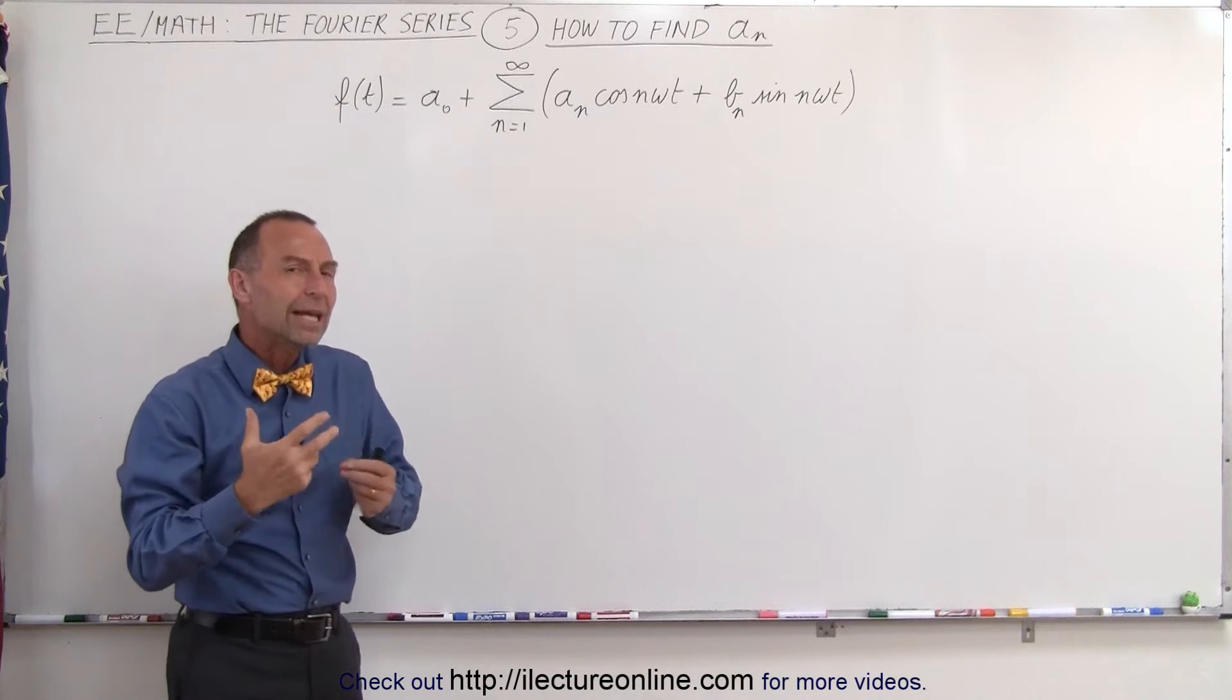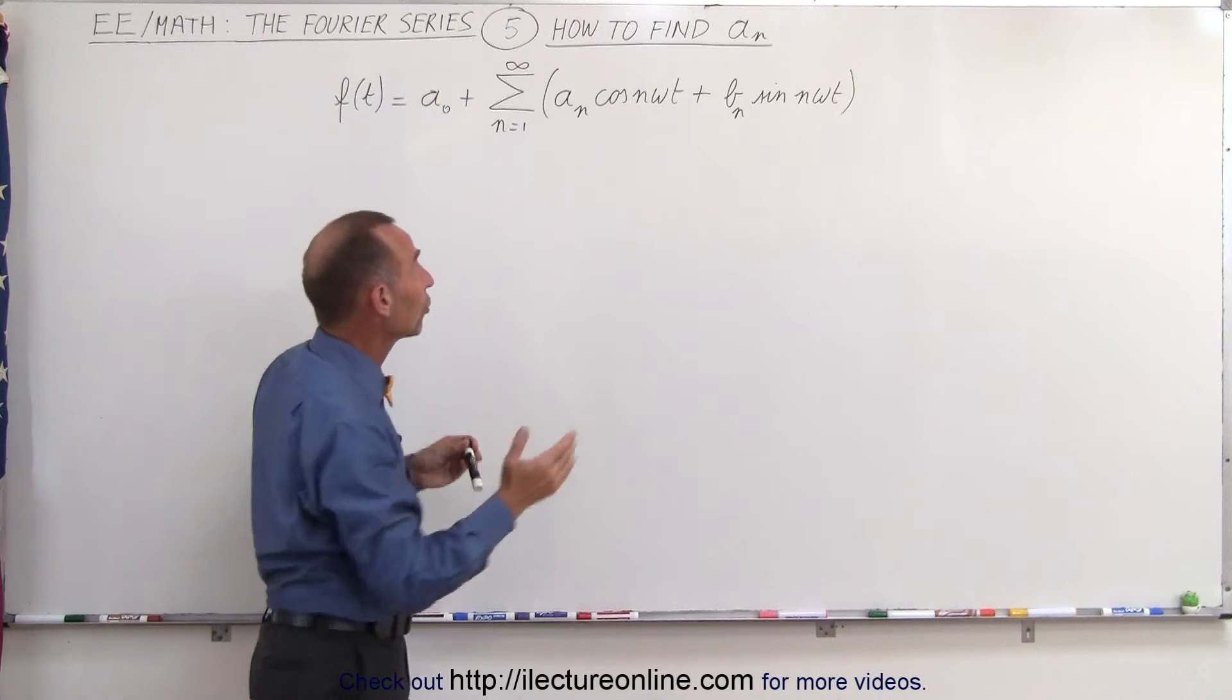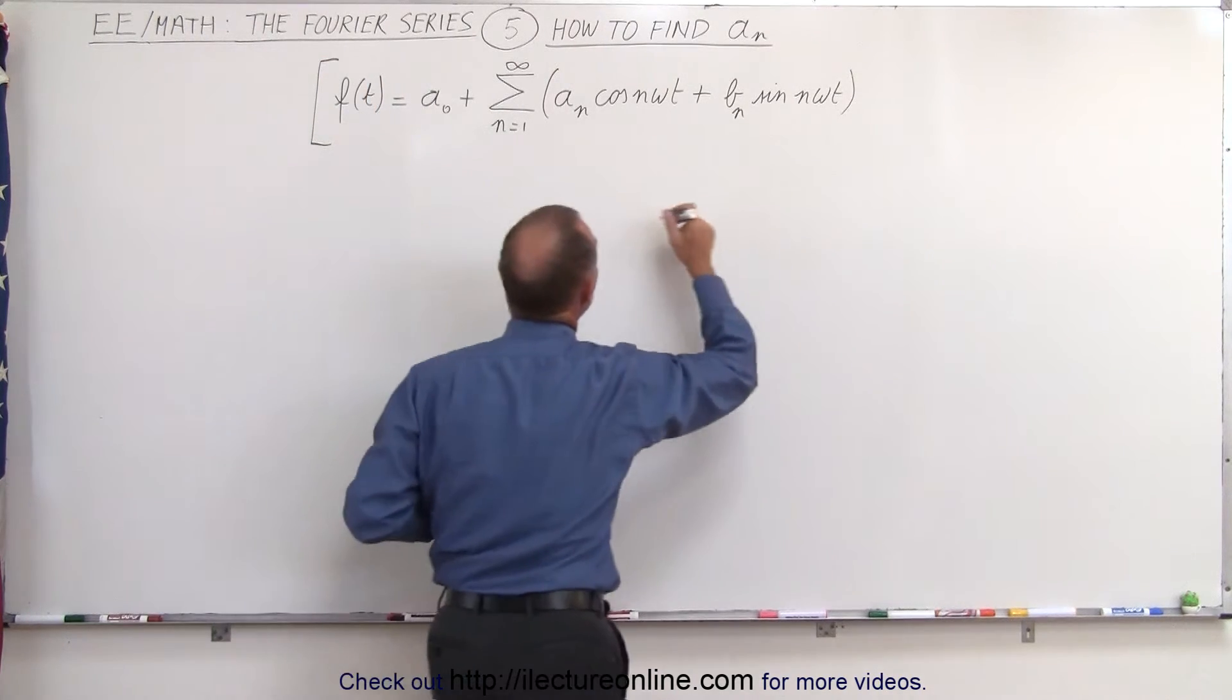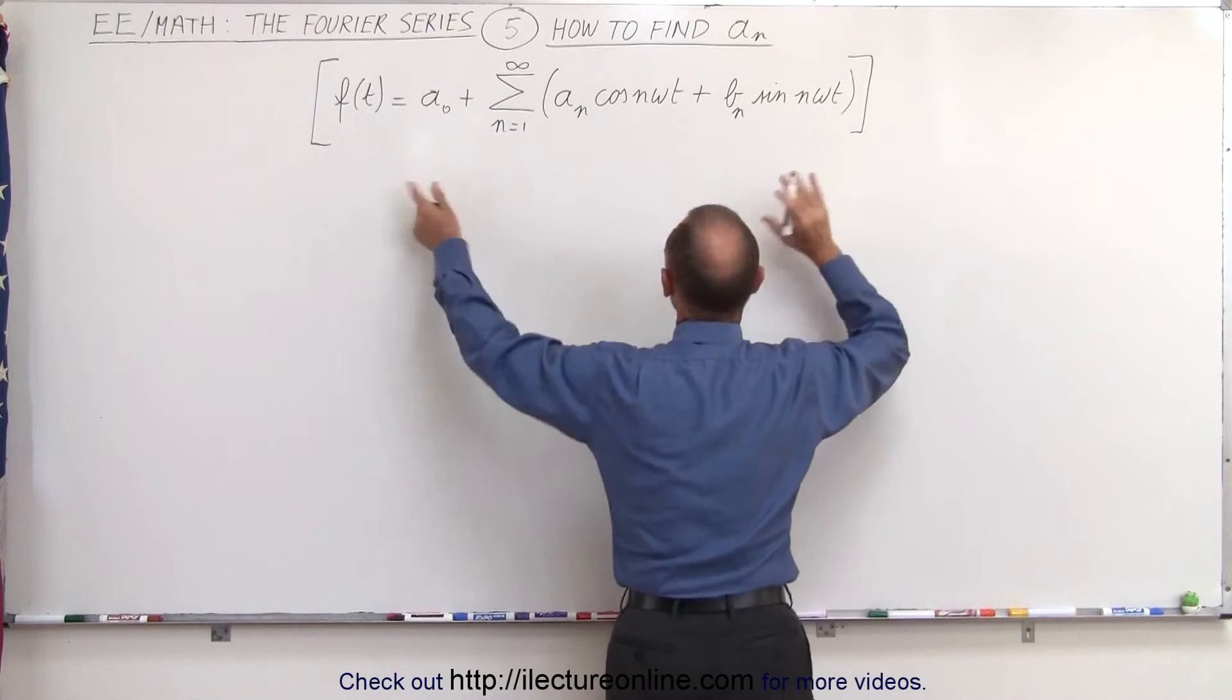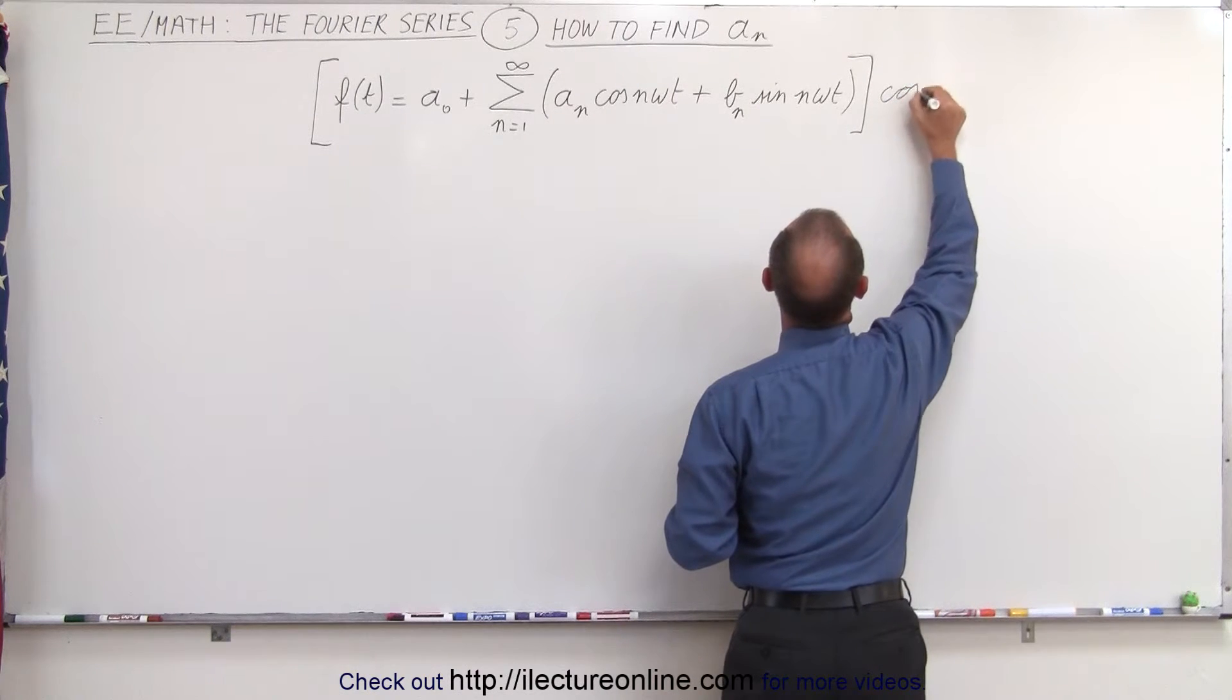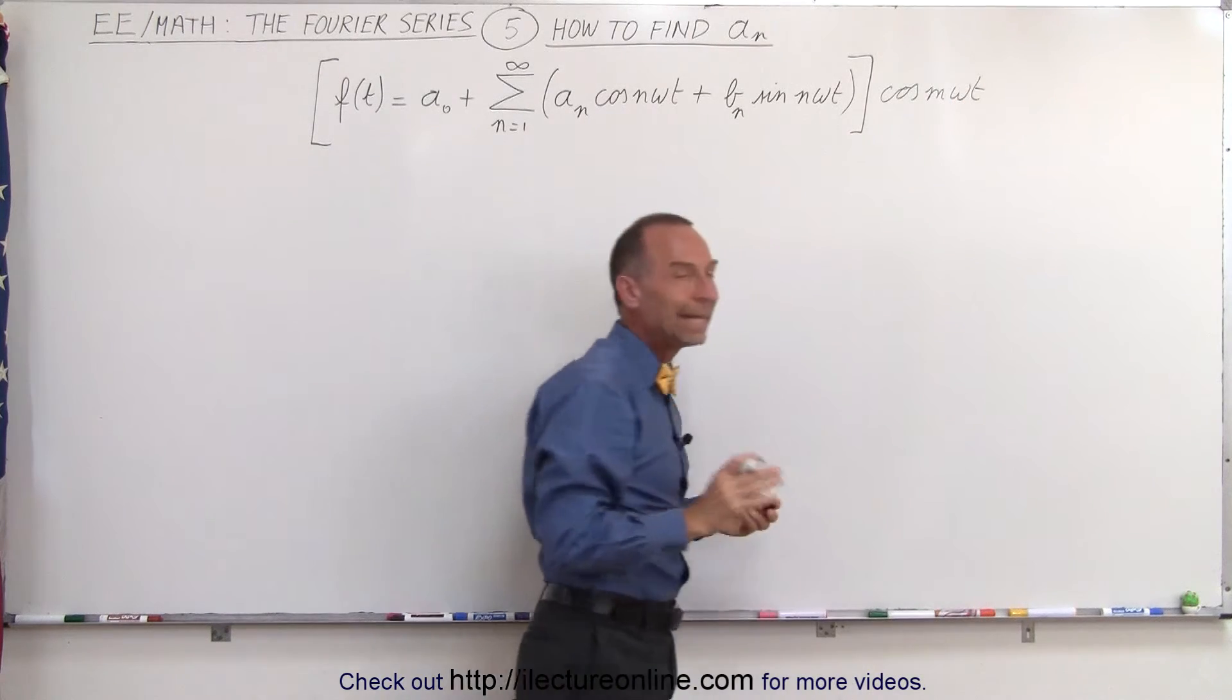So it allows us to eliminate some unwanted terms and isolate A sub n. And so the trick here is to integrate both sides of this equation. So what we're going to do is we're going to multiply both sides of the equation by the cosine of m omega t,